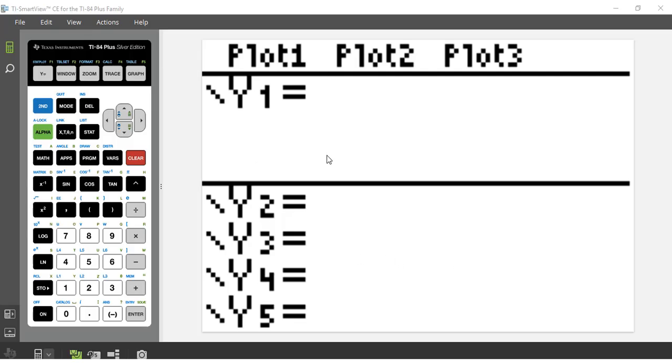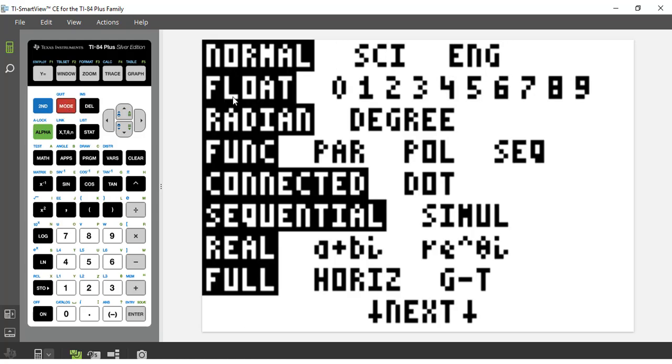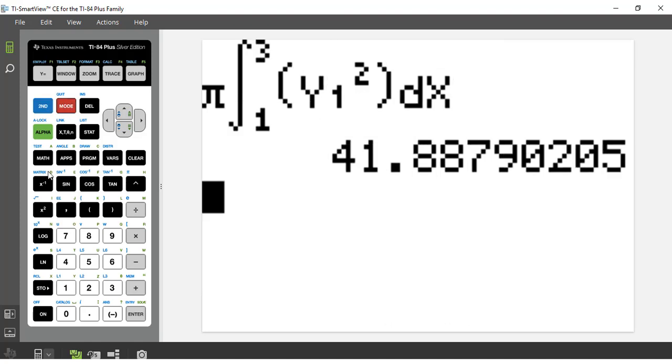First of all we will put cosine x here as the outer function and sine x as the inner function. Then remember while you do the integral mode must be radian. Then we go to pi first.